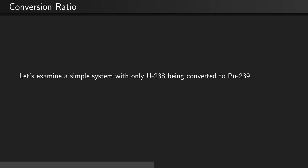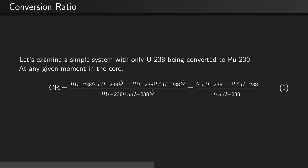Let's consider a simple system with only uranium-238 being converted into plutonium-239. At any given moment in the core, the conversion ratio equals the concentration of U-238 times the absorption cross-section of U-238 times the flux minus the concentration of U-238 times the fission cross-section times the flux, all divided by the concentration times the absorption cross-section times the flux.